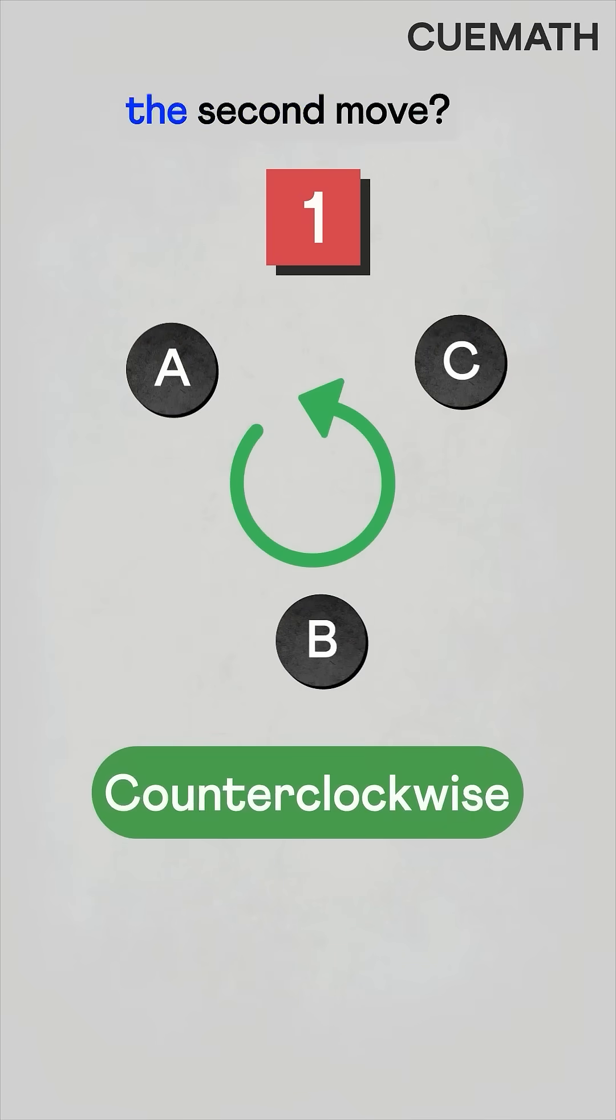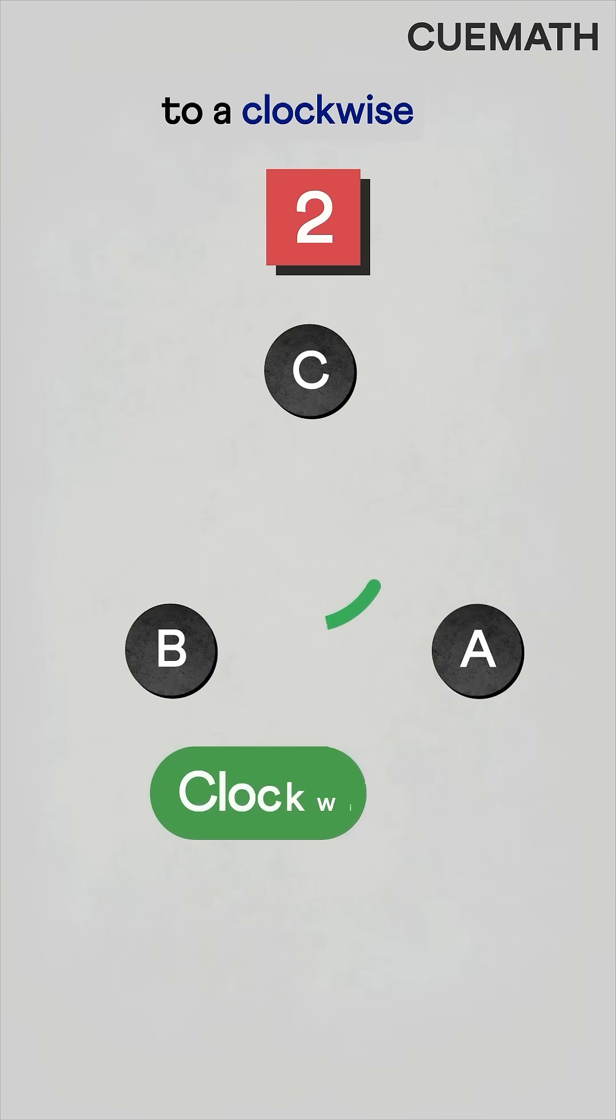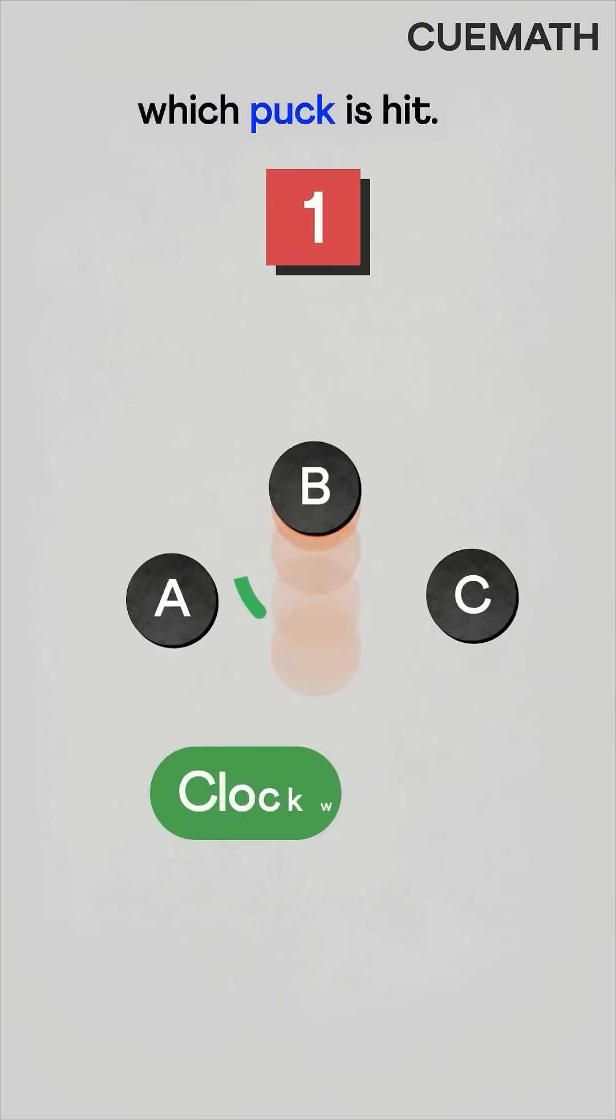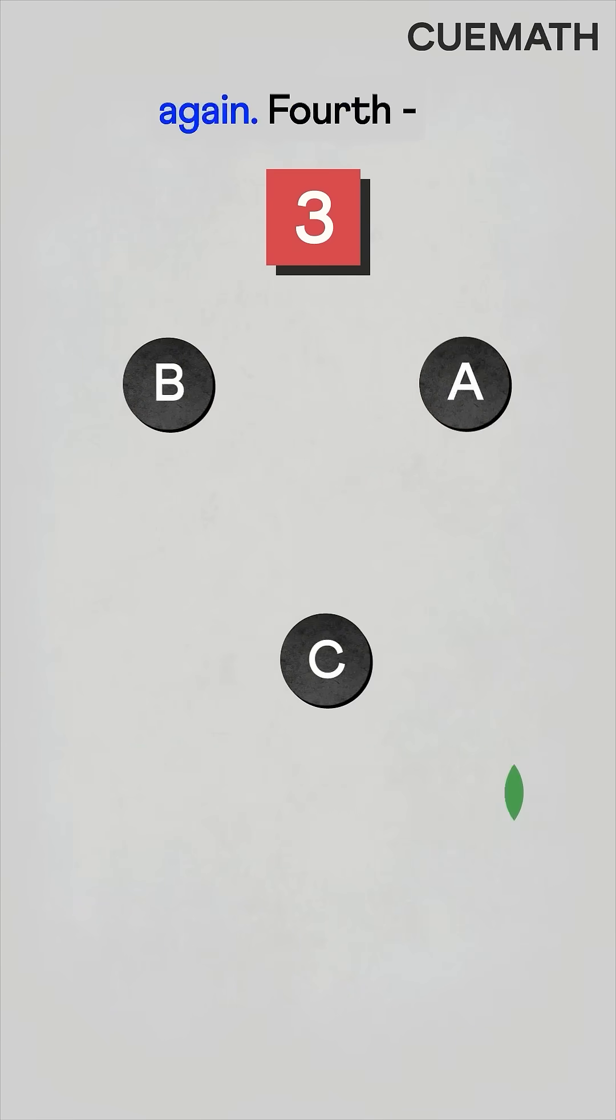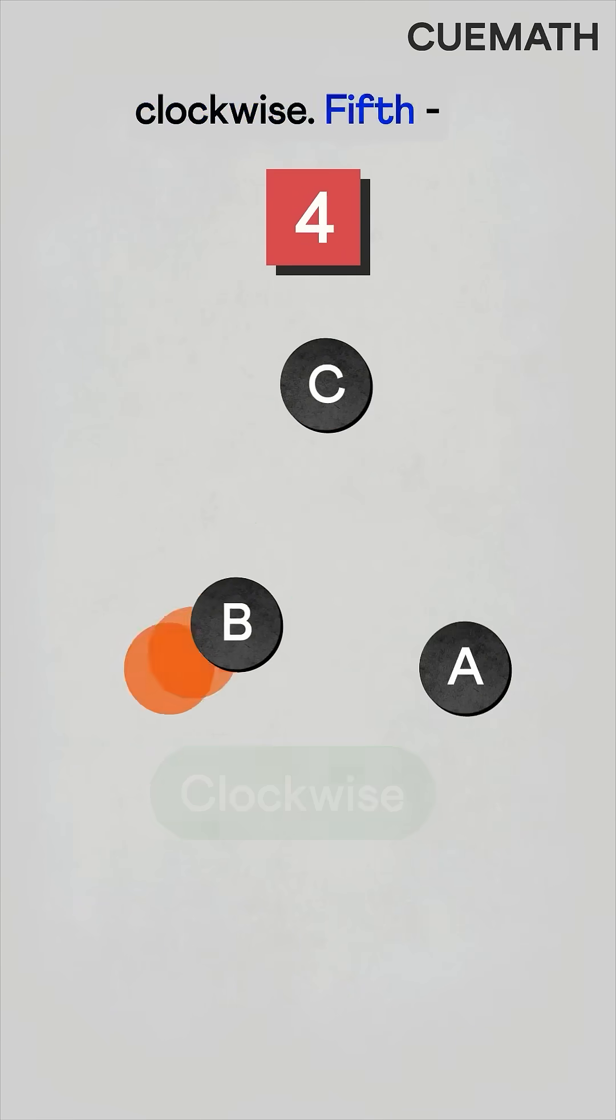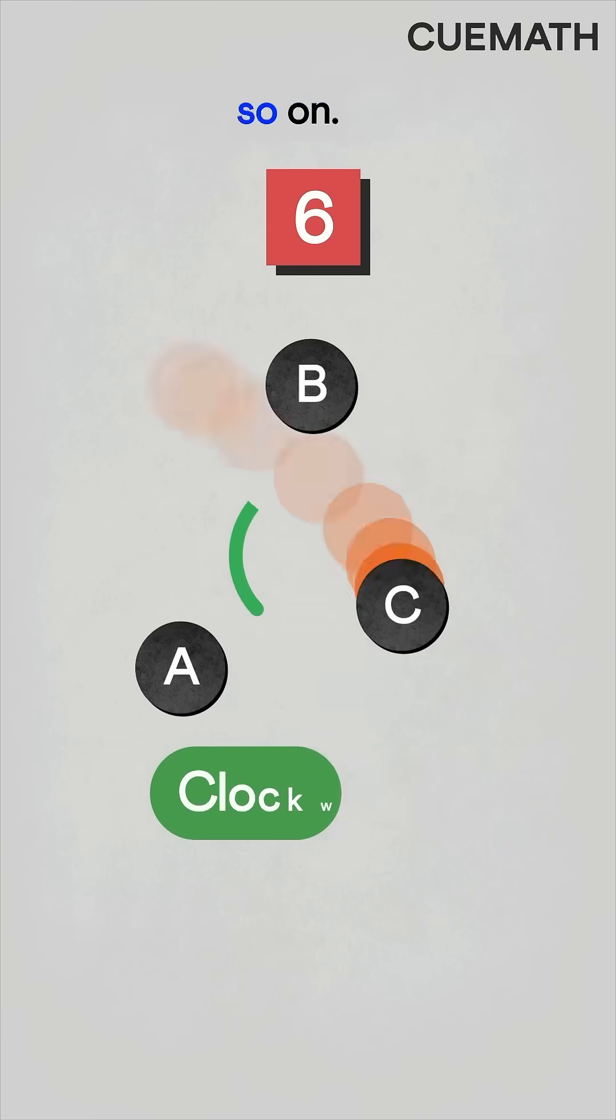Now what happens after the second move? The pucks come back to a clockwise orientation, no matter which puck is hit. Third move? Counterclockwise again. Fourth? Clockwise. Fifth? Counterclockwise. And so on.